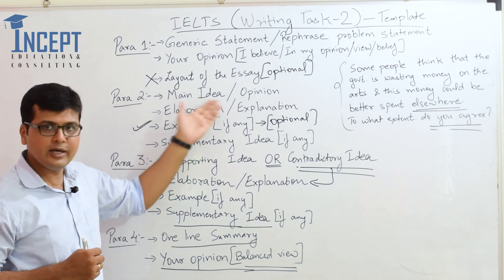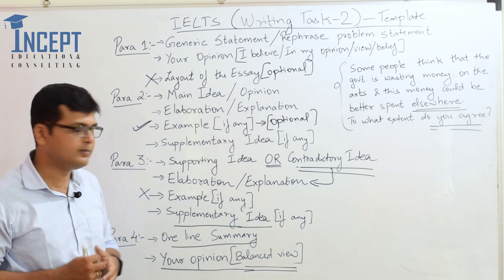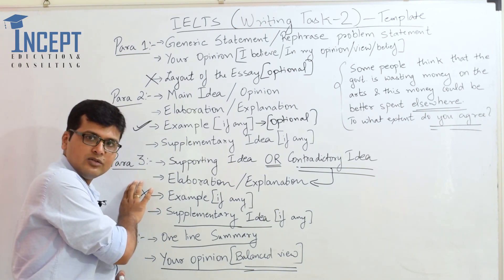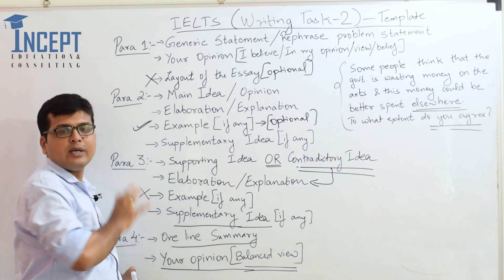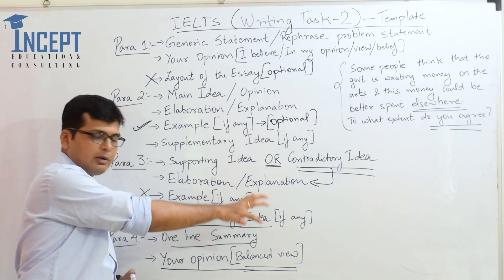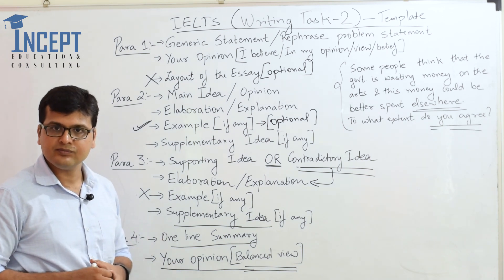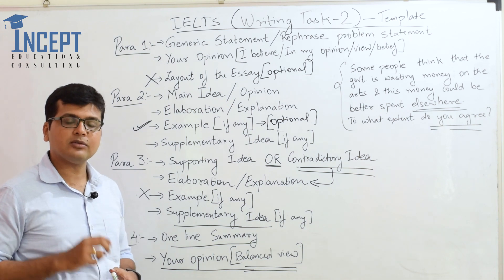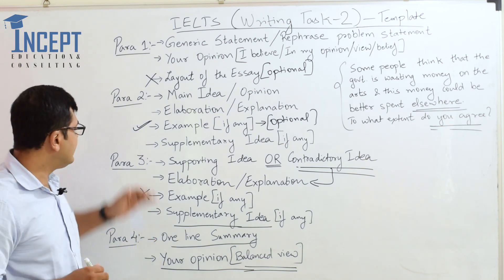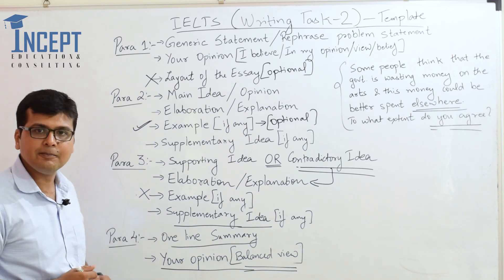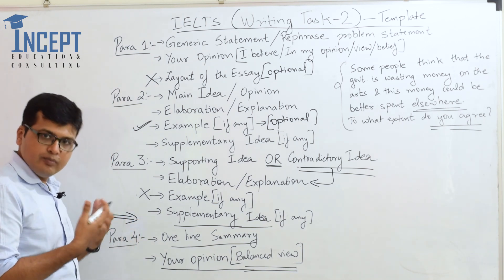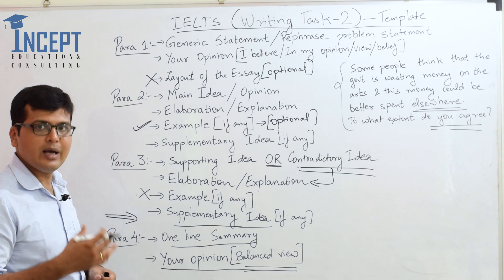For paragraph 3 in these essay types, it could be the alternate thought — where you write about disadvantages or throw light on solutions pertaining to that topic. You can write about it, elaborate on the same, and provide an example or supplementary idea if there is one. Thus, this template can be used for the first three essay types. For 'discuss' topics or situation-problem-solution topics, you can simply expand this four-paragraph essay into a five-paragraph essay.